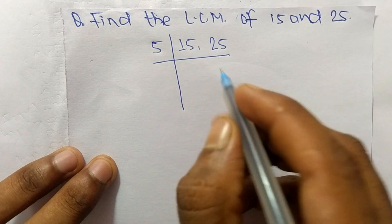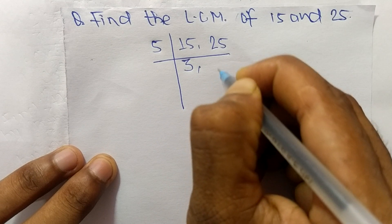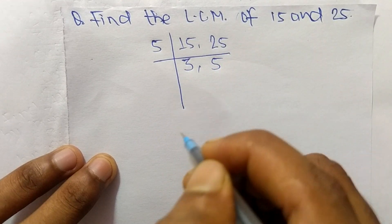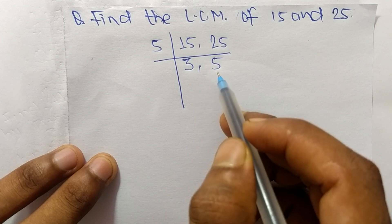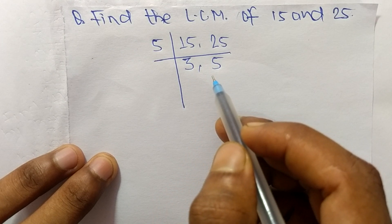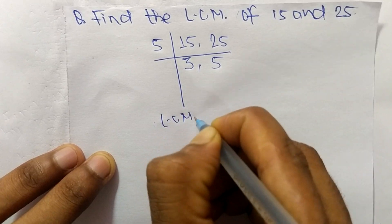So we have numbers here, 3 and 5, which are not exactly divisible by the same number. So its LCM...